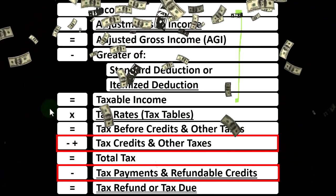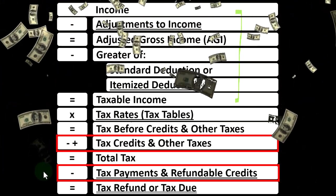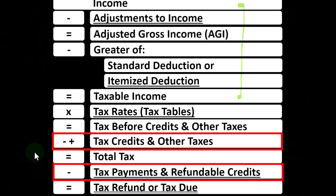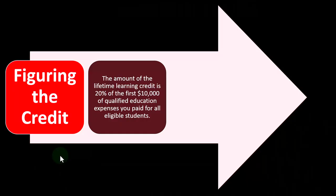Also, the credits down below have a non-refundable portion and a refundable portion. Non-refundable means we can't take the credit liability below zero — we're not going to get a refund if the tax liability goes below zero. The refundable portion means that we can do that, resulting in the tax code being used not as a tax system in that case, but as a welfare or benefit program for that refundable portion of a credit.